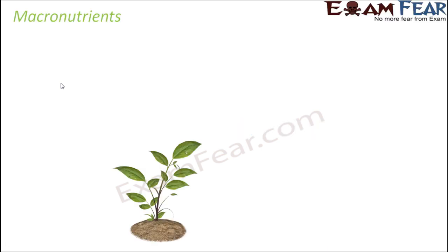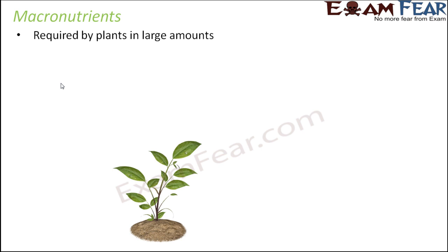Let us start with macronutrients. As I said, they are required by plants in large amounts. That means plants absorb a lot of them from the soil, and therefore these nutrients are found in plant tissues in large amounts as well.